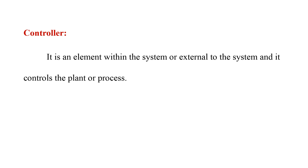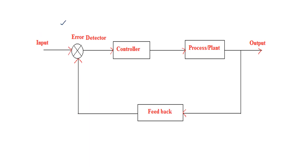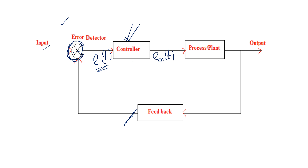Coming to the concept of controller: a controller is a subsystem or an element within the system or external to the system, and it controls the plant or process. Using a block diagram of a closed loop control system, the error detector compares the reference input and the feedback output, generating an error signal. This error signal is given to the subsystem called the controller, which generates the actuating signal A(t). This control signal is given to the plant, and depending upon it, we get the output value from the control system.